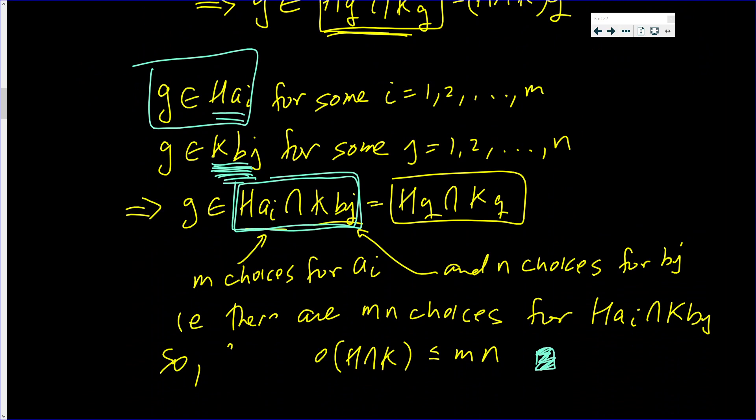In fact, we did a little bit more — we showed an upper limit for the index of H intersect K. Not only is it finite, but it's no more than M times N. If you like watching videos like this, seriously consider subscribing to my channel, click the like button, leave a comment, and tell your friends, family members, and enemies about my channel. See you guys in the next video — watch and learn.